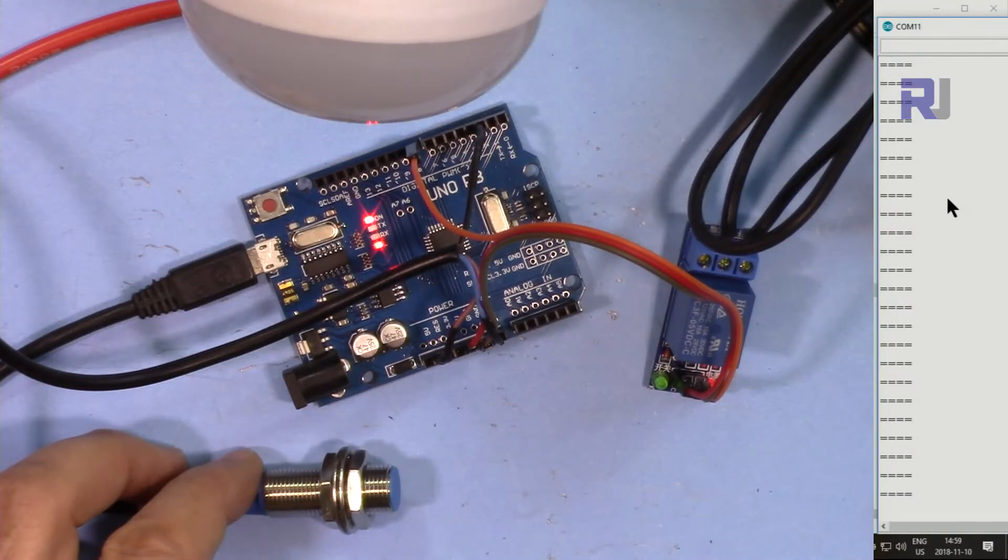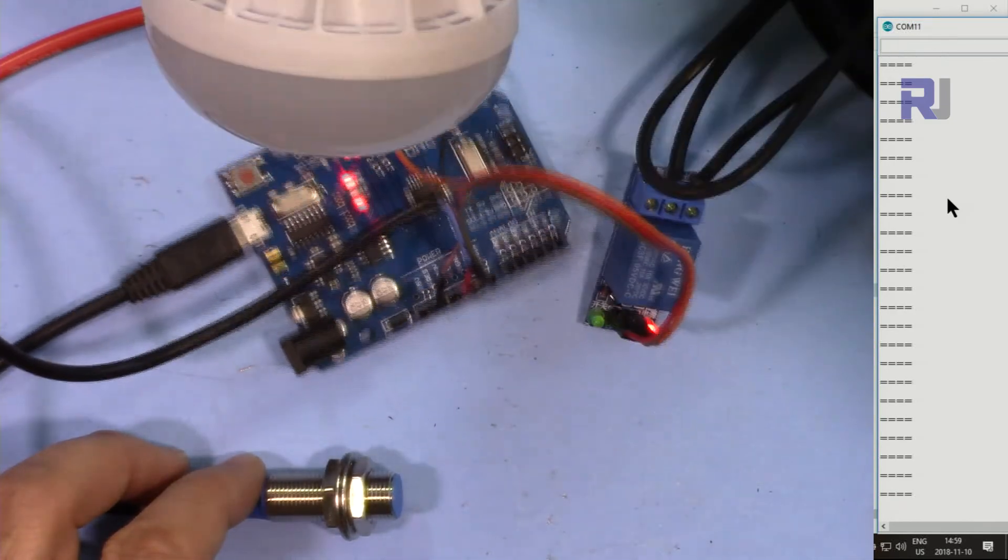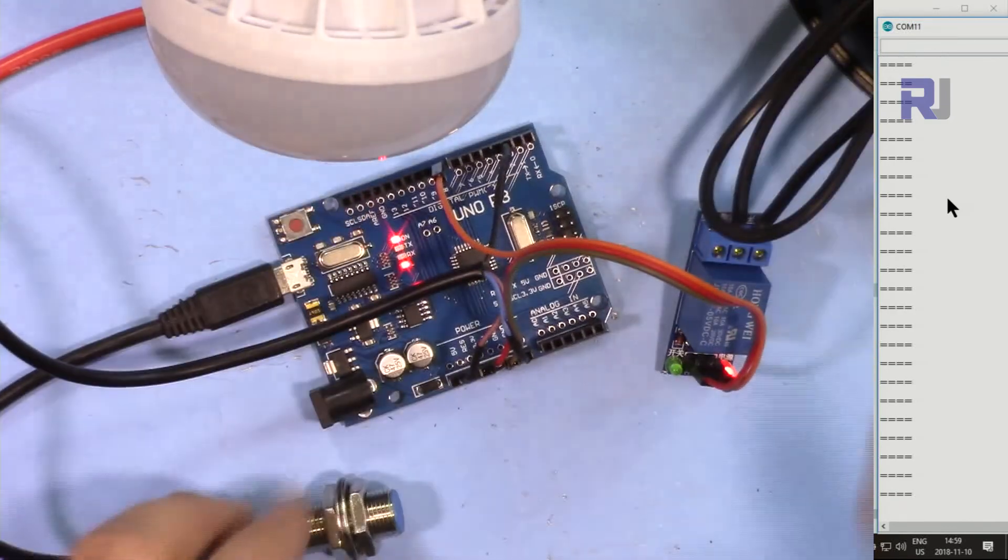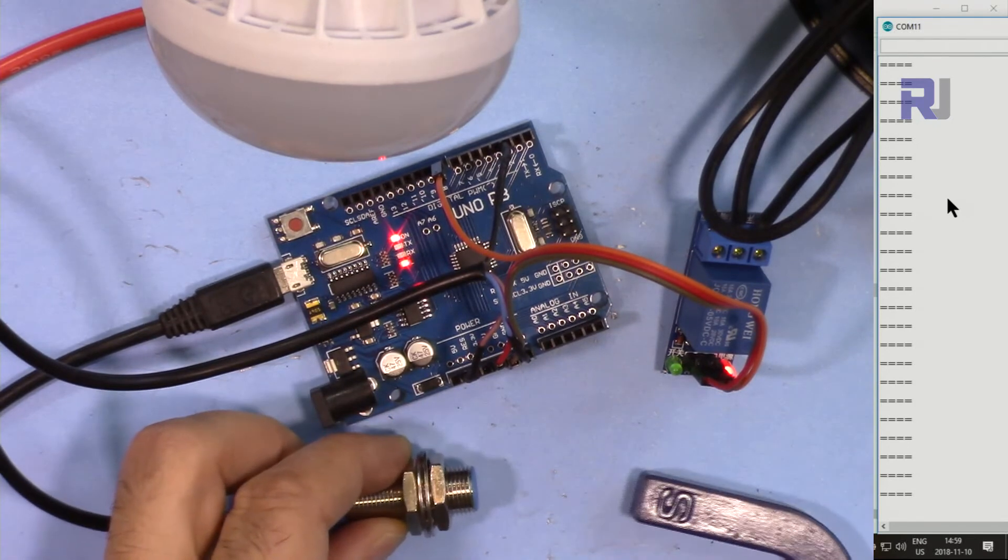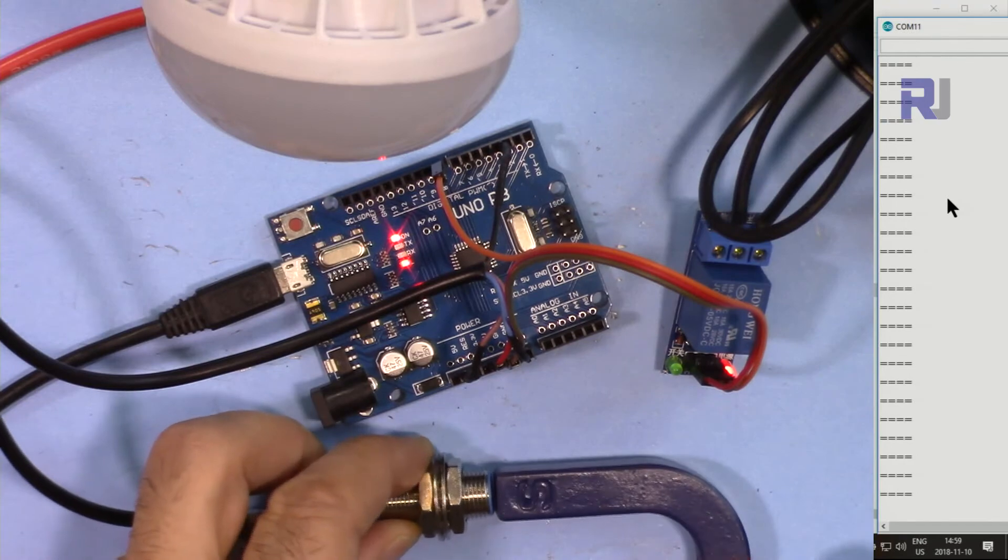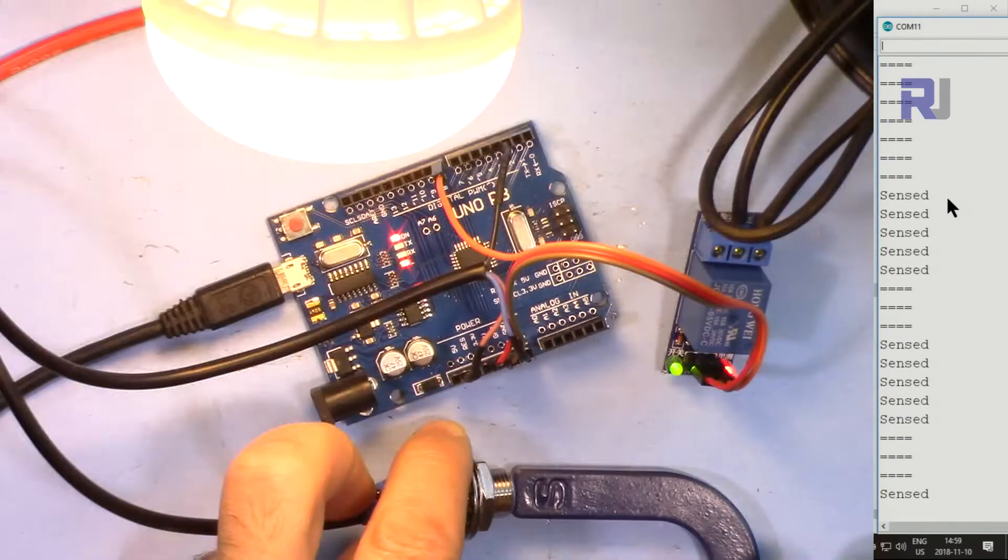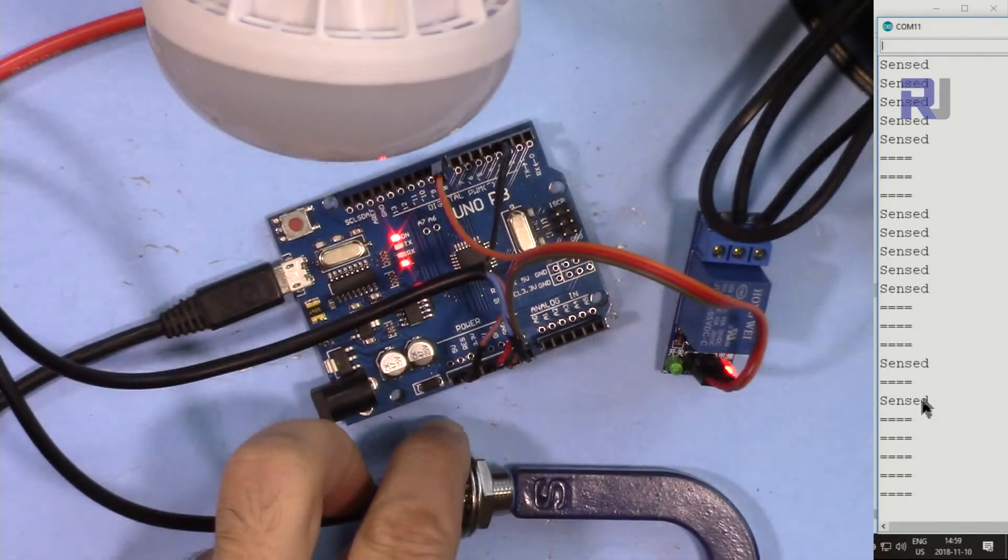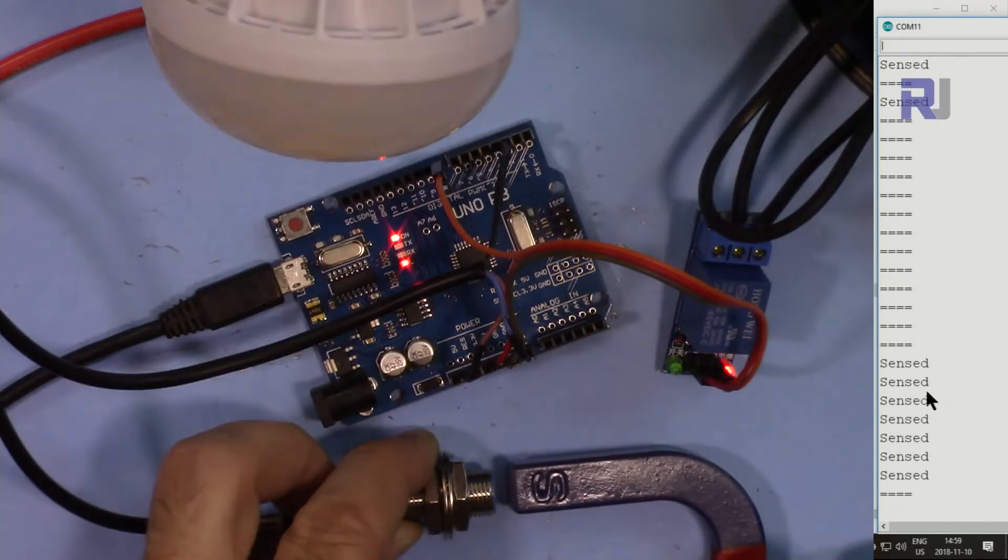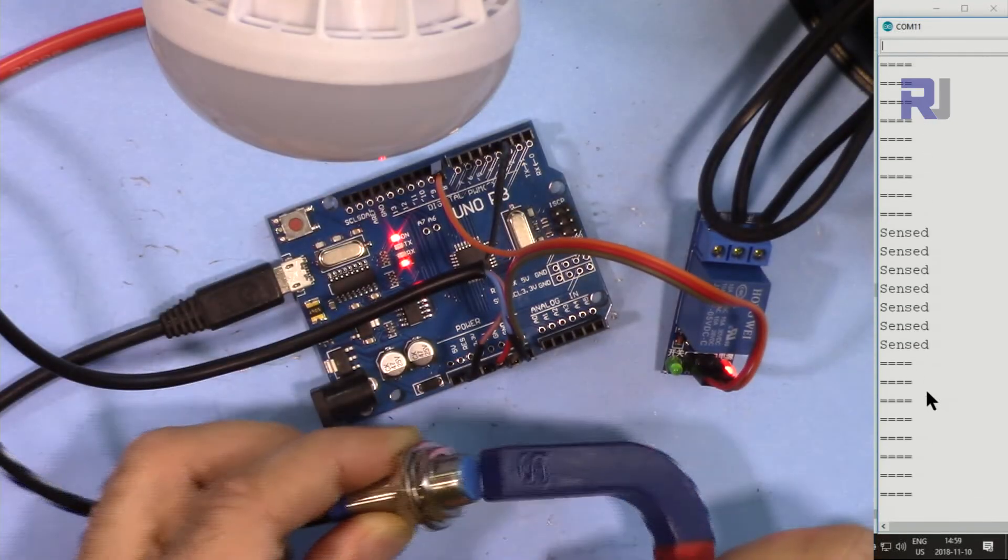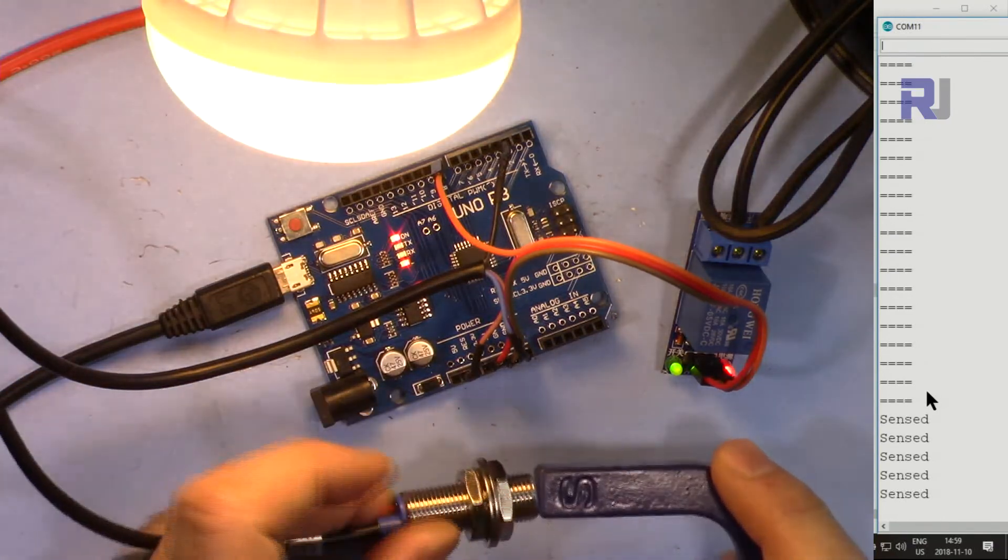Let me now demonstrate. This is the serial monitor. The relay is connected, this is my AC bulb here. The proximity sensor is here. If I put this closer, it will turn on. You can see it sensed; it needs to be very aligned. A little distance will not work. Even like this it will not work, so the pole must be on this side.